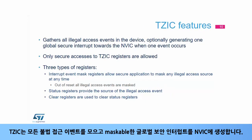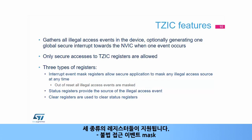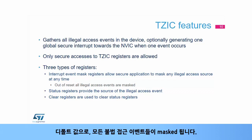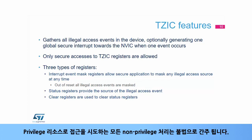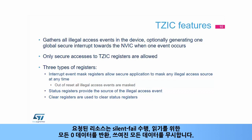The TZIC gathers all illegal access events and generates a maskable global secure interrupt towards the NVIC. Only secure accesses are allowed to TZIC registers. It supports three types of registers: illegal access event mask, illegal access event status, and illegal access event clear. By default, all illegal access events are masked. Any non-privileged transaction trying to access a privileged resource is considered illegal; however, there is no illegal access event generated for this type of illegal access. The addressed resource follows a silent-fail behavior, returning all-zero data for reads and ignoring any writes. No bus error is generated.